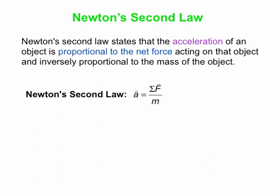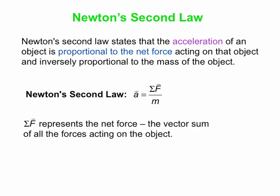Acceleration is also inversely proportional to the mass of the object. Here is Newton's second law as an equation: acceleration A equals sigma F over M. M is the mass, F stands for force. That sigma, the Greek letter sigma, indicates a summation - we're adding up all the forces as vectors. Sigma F represents the net force, the vector sum of all forces acting on the object, so you do have to account for directions of those forces.